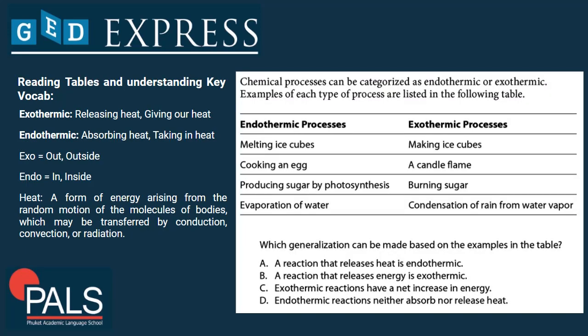Our first question is on reading tables and understanding key vocabulary. Chemical processes can be categorized as endothermic and exothermic. Examples of each type of process are listed in the following table.